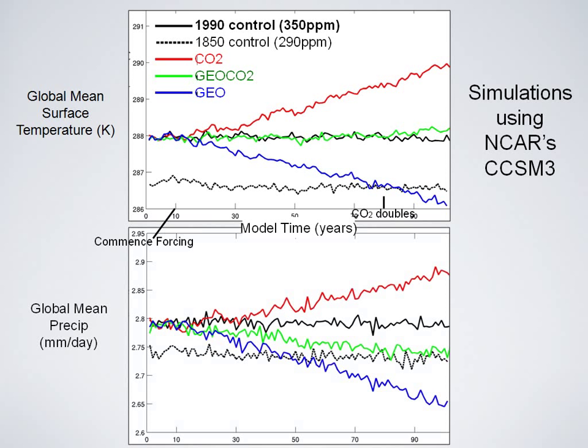But now if we look at precipitation — a time series of global mean precipitation for the same simulations — precipitation increases with the increasing CO2. But in the GeoCO2 run with the two forcings together, precipitation is consistently declining. This is related to the fact that the forcing we're prescribing is a shortwave effect, while carbon dioxide is a longwave effect, and these two types of forcings affect radiation differently.